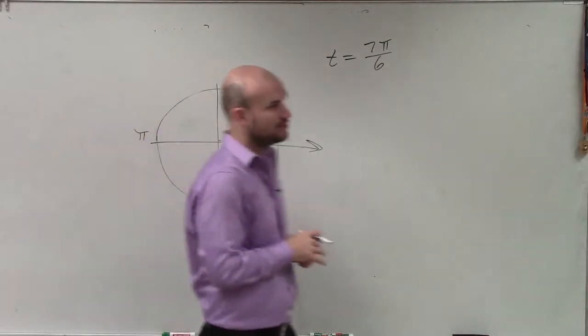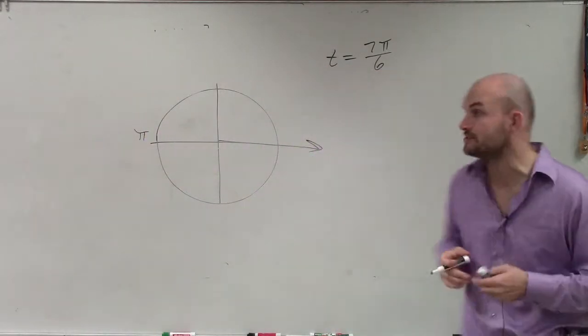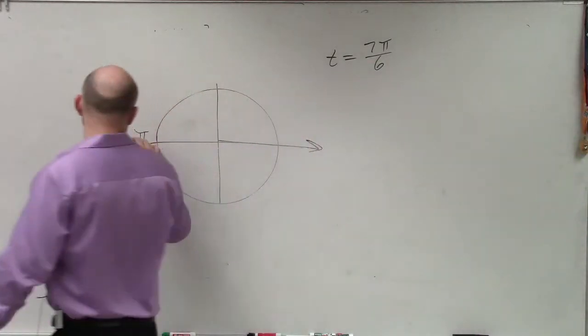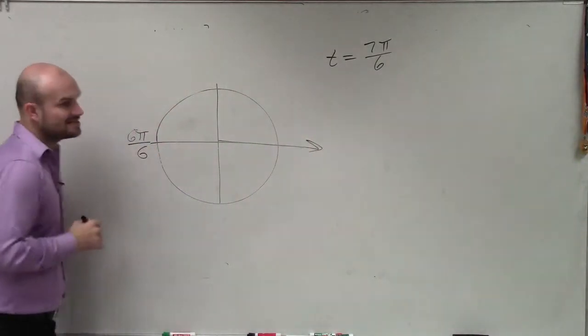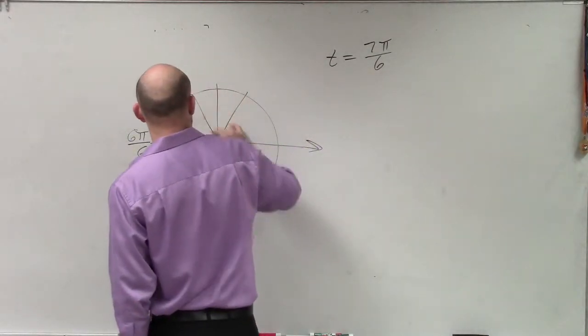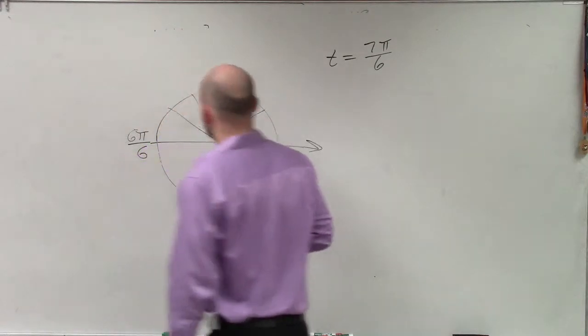We know halfway around the circle is an angle in terms of pi, pi radians. I'm going to take my denominator and break this up into 6. So pi is the same thing as 6 pi over 6. Then I'll break this up into 6 parts.